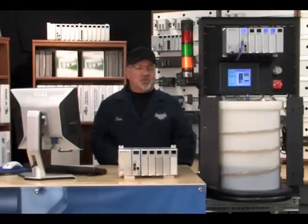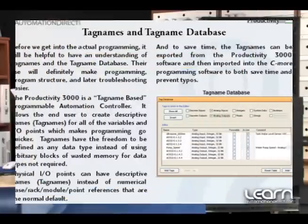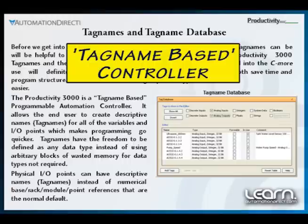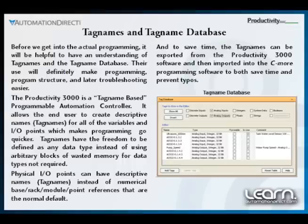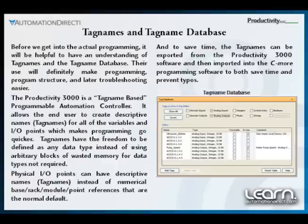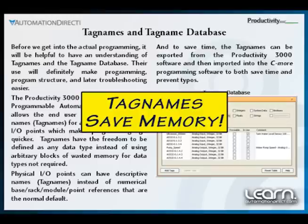Let's start our programming by first discussing the various signals we will be using in our application and how we can use tag names in our program to reduce programming time. The Productivity 3000 Programmable Automation Controller is a tag name based controller. Instead of coded numerical references to the various input and output signals and internal data registers used in the CPU, we can create descriptive readable names called tag names to define our IO points and data variables. Tag names have the freedom to be defined as any data type, so instead of using different arbitrary blocks of memory for each data type which wastes memory, we only use what we need.